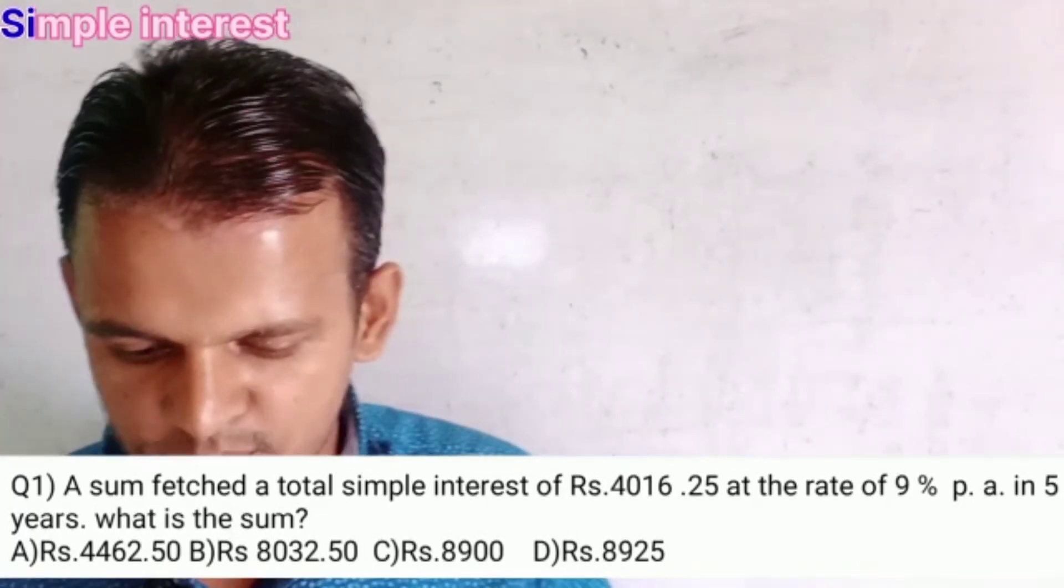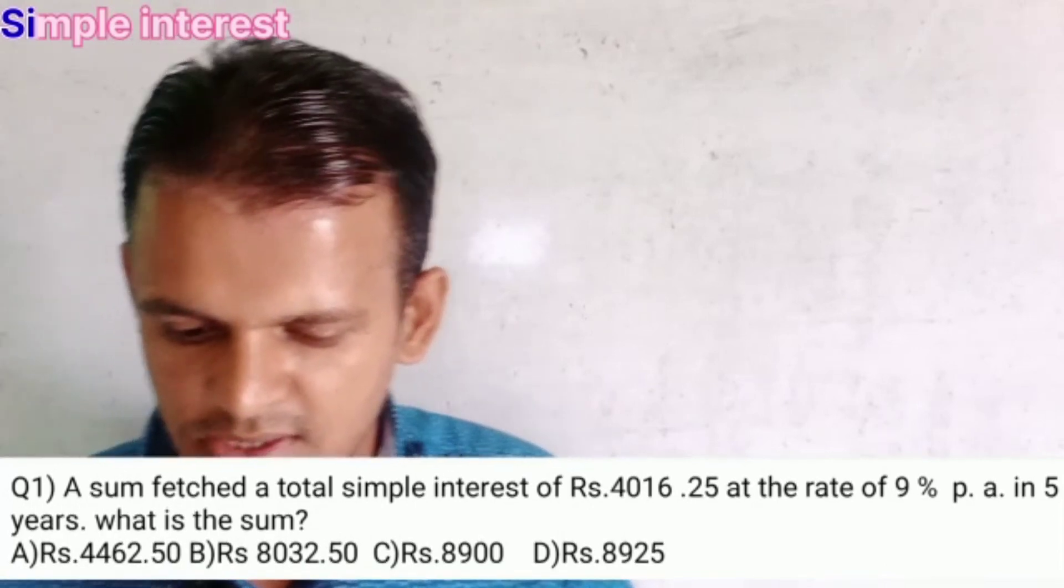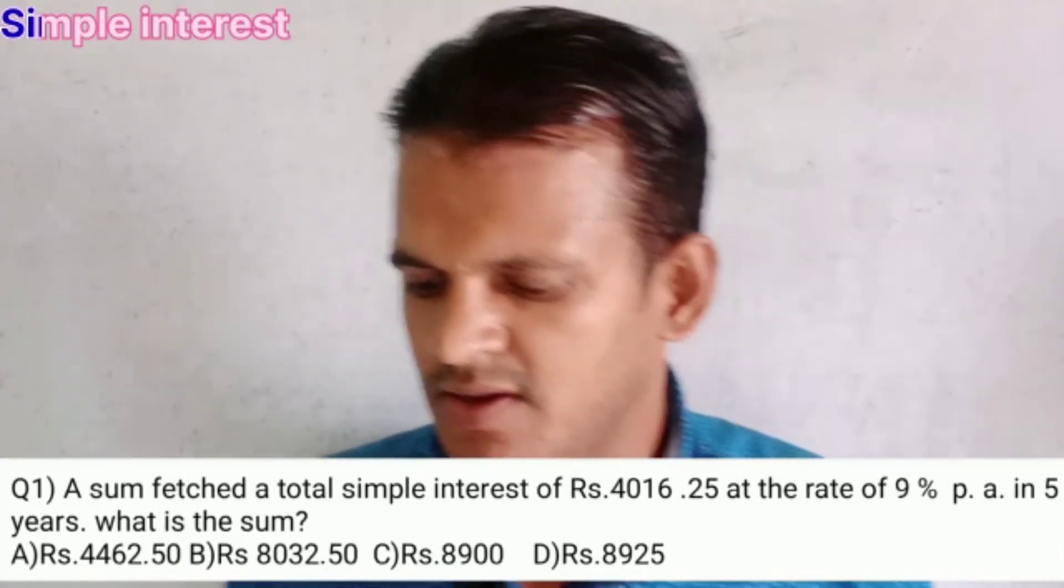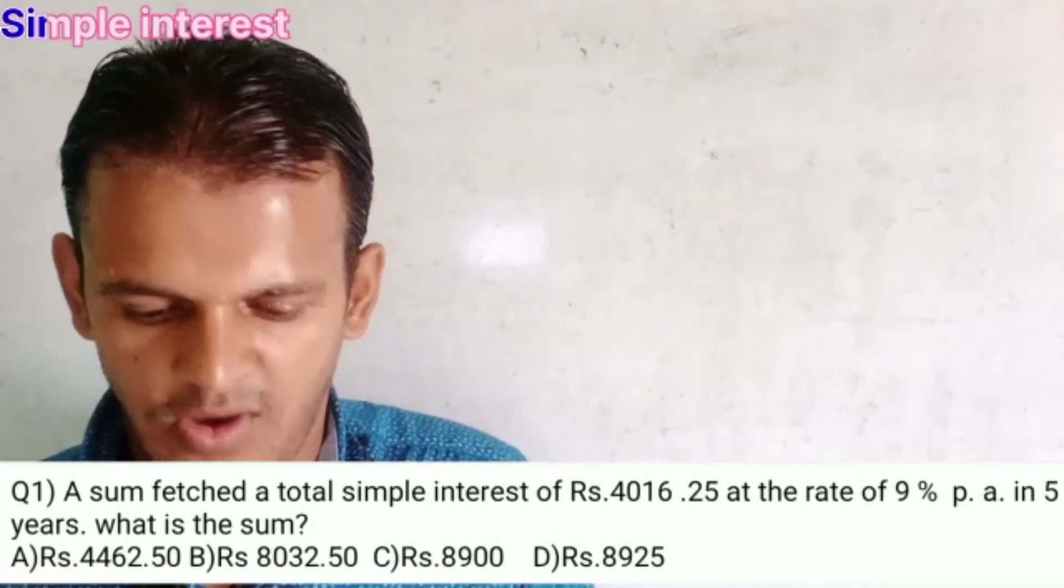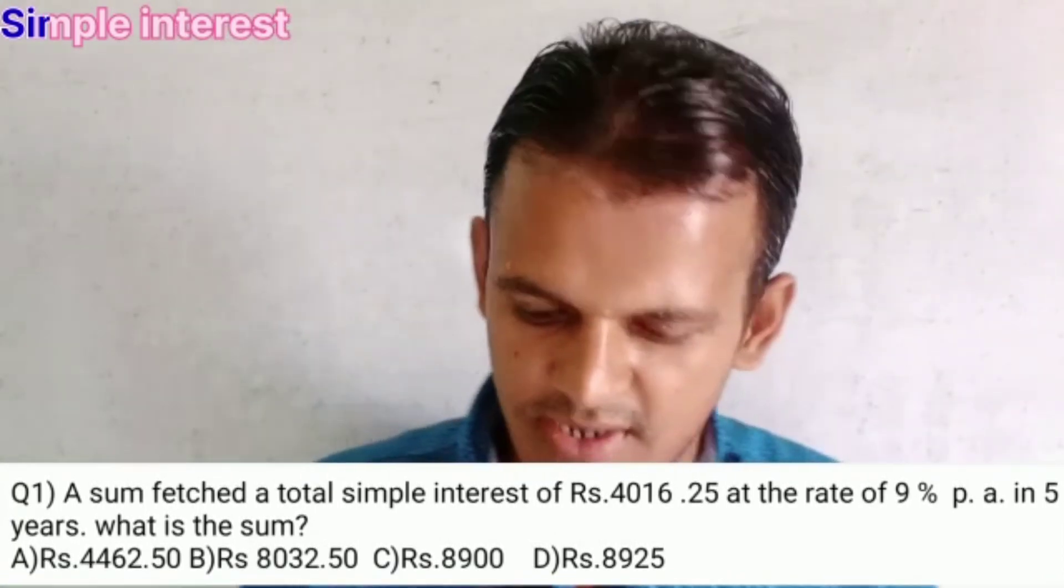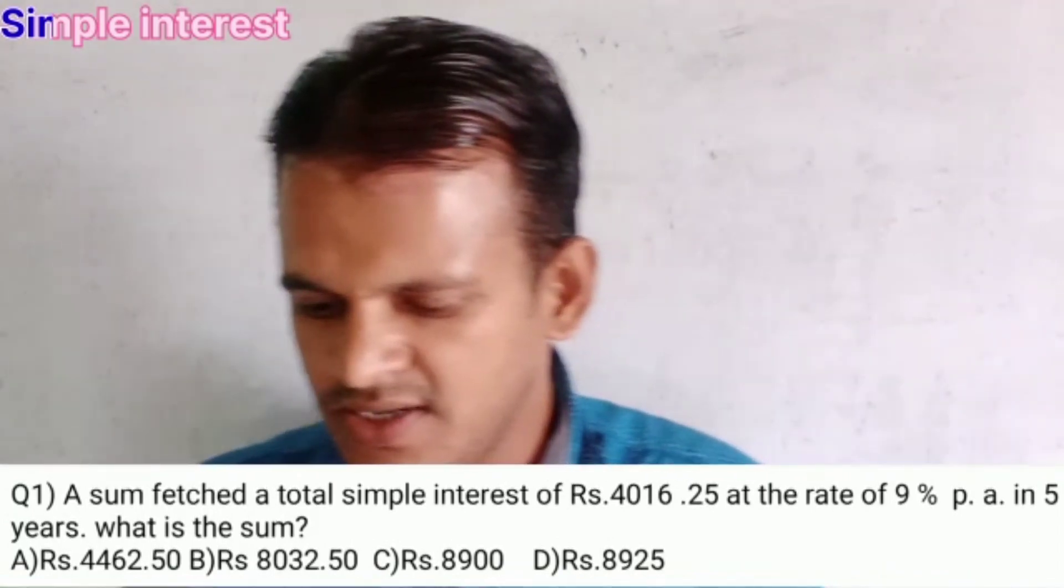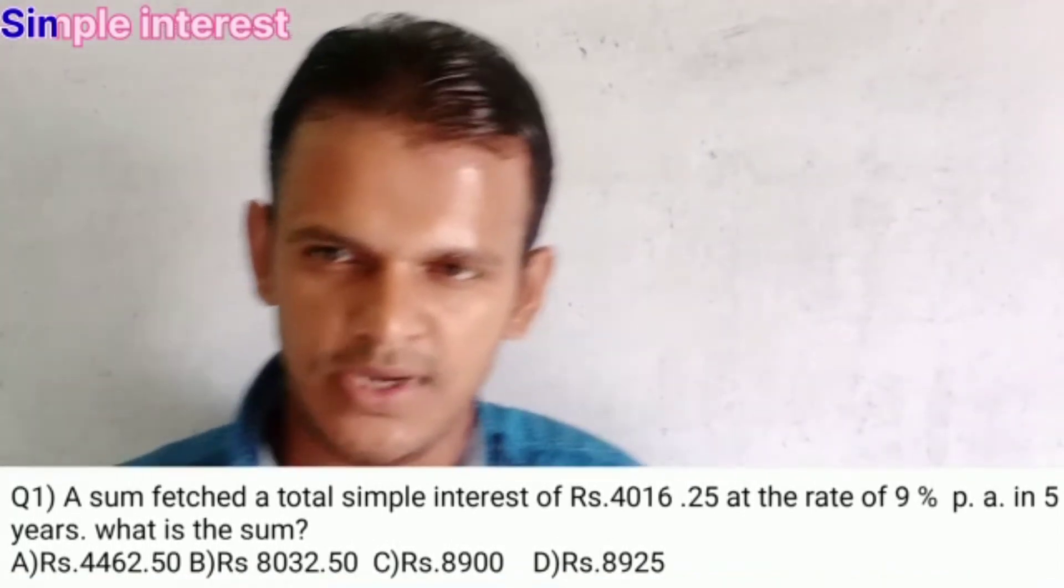Here are four options. Option A is 4462.5. Option B is rupees 8032.5. Option C is 8900. And option D is rupees 8925.